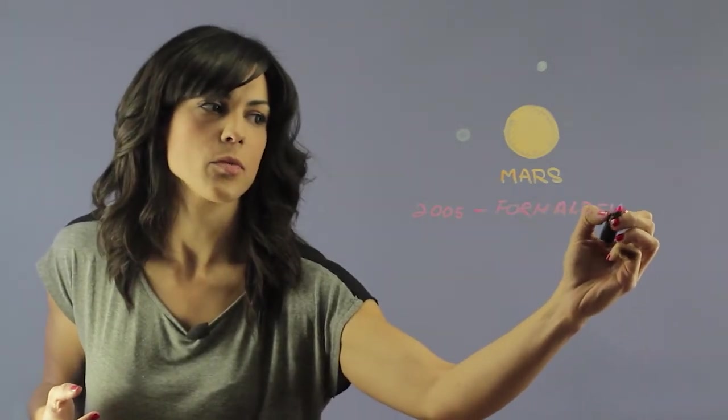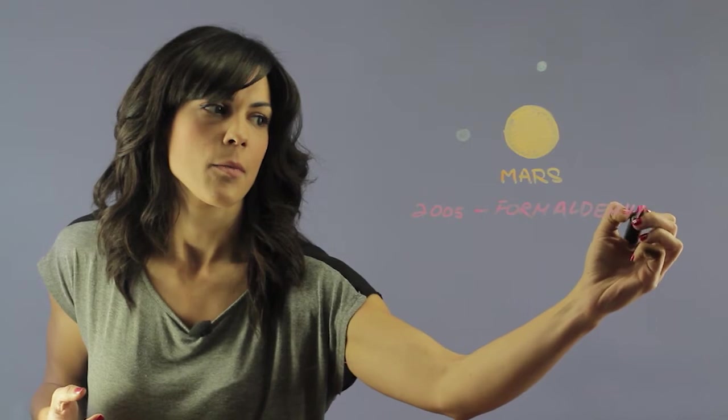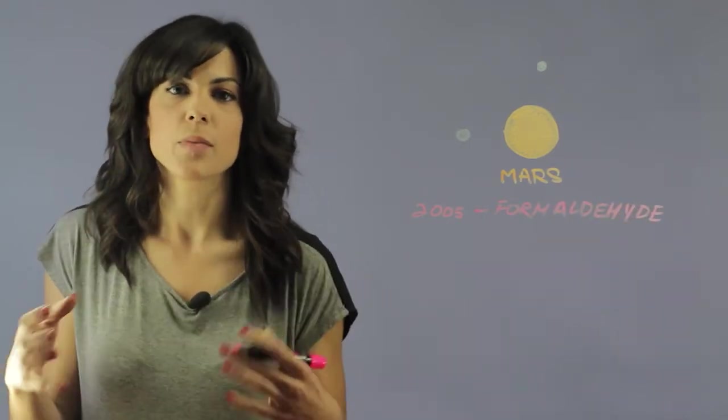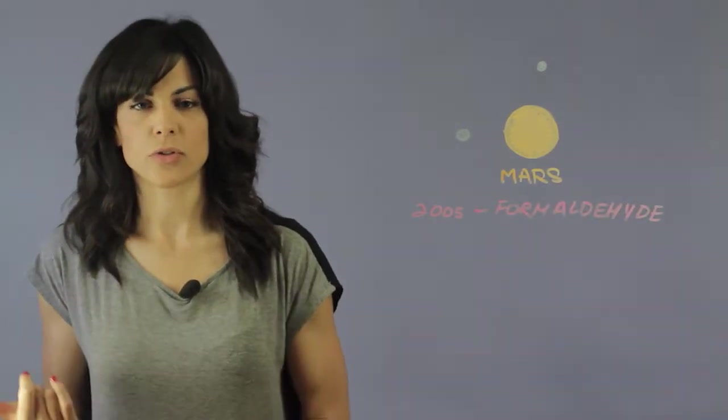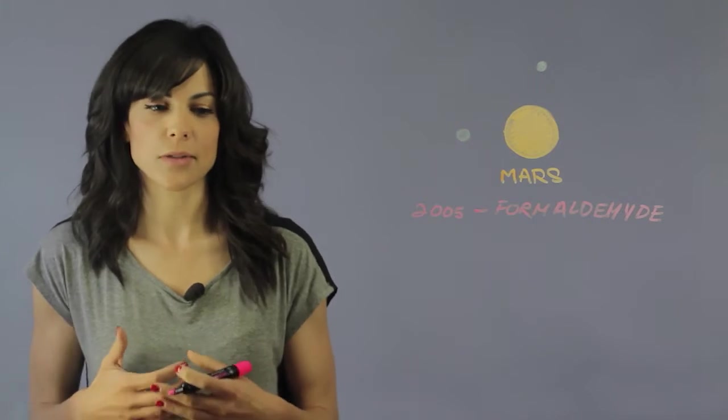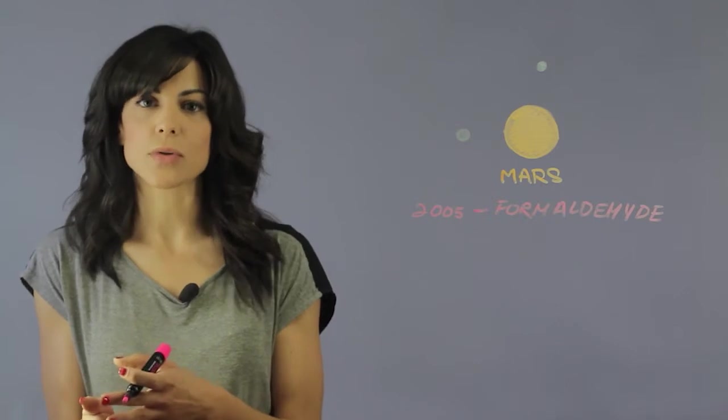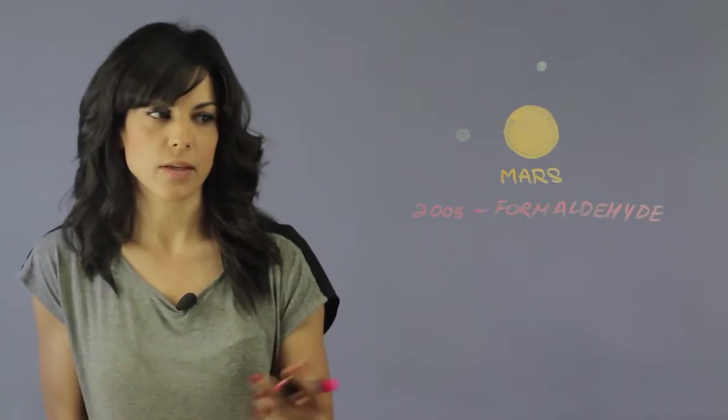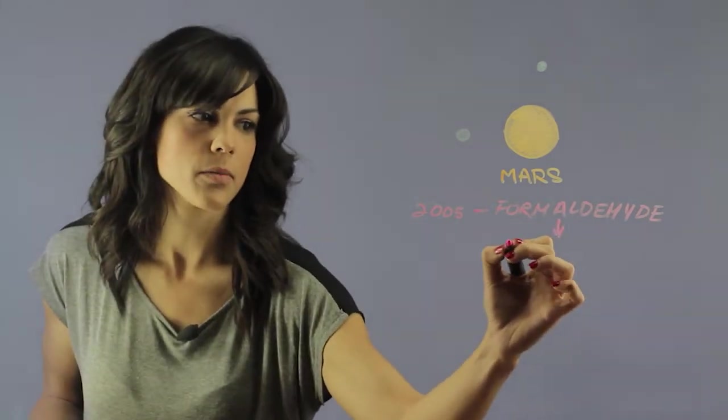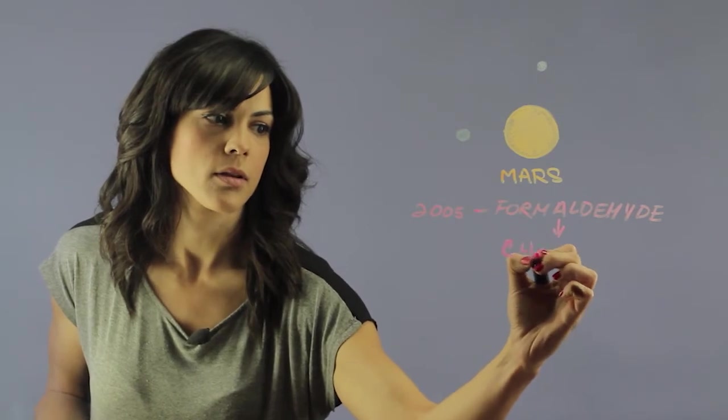Formaldehyde. And the problem with this is that people assume that something big had to be happening on Mars in order for us to get this formaldehyde, but formaldehyde is expected when there is methane in a planet. Because formaldehyde is a natural oxidation of methane, so it comes from methane oxidation.